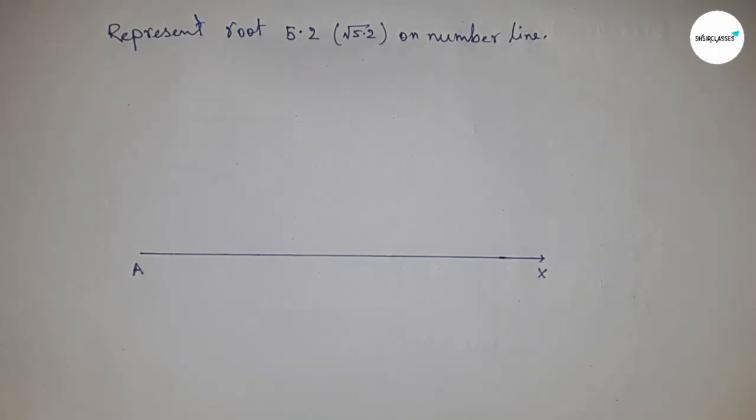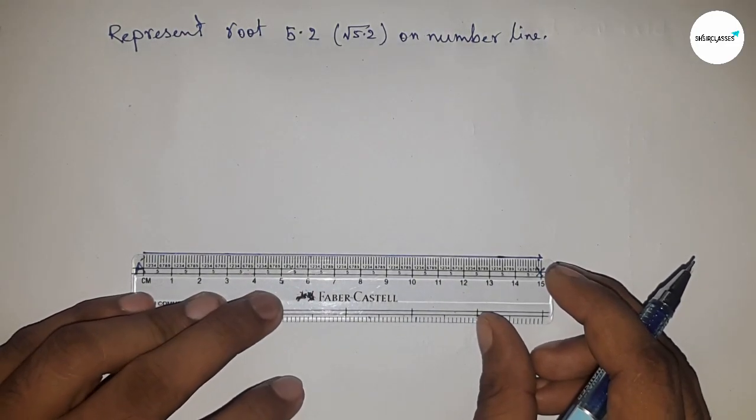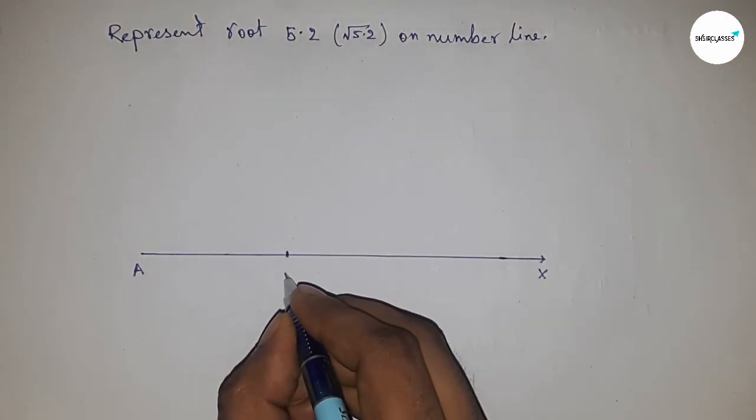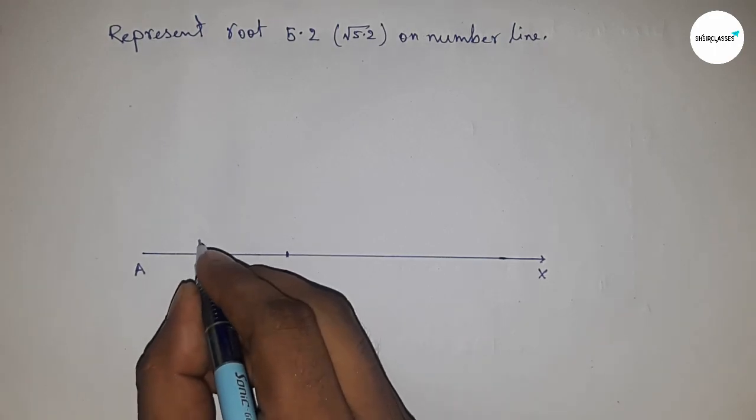Next, take a length of 5.2 centimeters and mark point B, so AB equals 5.2 centimeters.